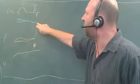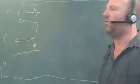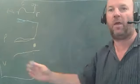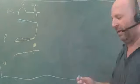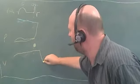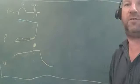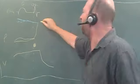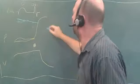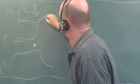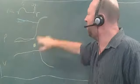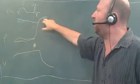Once ventricular pressure becomes greater than aortic pressure, the aortic valve opens and blood begins to come rushing out. Looking at volume, we have the period of rapid ventricular ejection. Because pressure in the ventricle is greater than pressure in the aorta, during this period we have the ejection of blood through the open aortic valve.